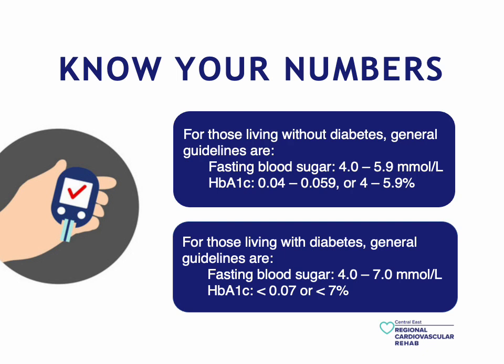Here we will review blood sugar targets. For those without diabetes, a fasting blood sugar between 4 and 5.9 and a three-month average — the HbA1c — between 4 and 5.9% is the target range. If you are living with diabetes, you want to aim for a fasting blood sugar between 4 and 7, and a three-month HbA1c of less than 7%. To hit these targets between blood work appointments, you should be checking your blood sugars regularly, improving your chances of a longer and healthier life.